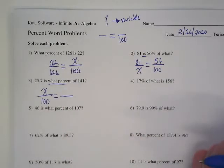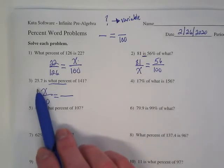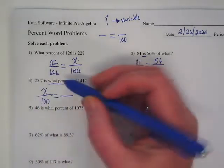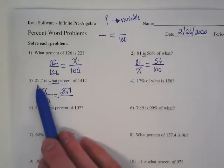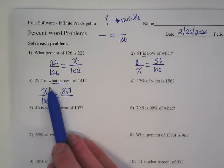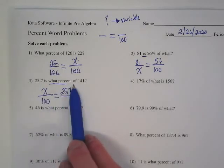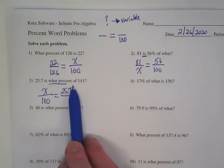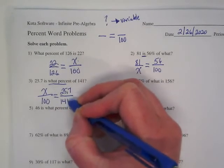And how do I set up the second ratio? 25.7 is going to be over, because the way this is worded, the 25.7 goes with the what percent. It goes with the what's missing part. Of 141, that's telling us that 141 is part of the percent or the whole. So it gets set up like that.